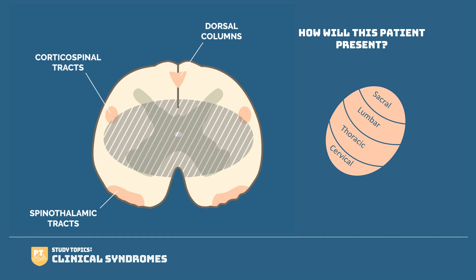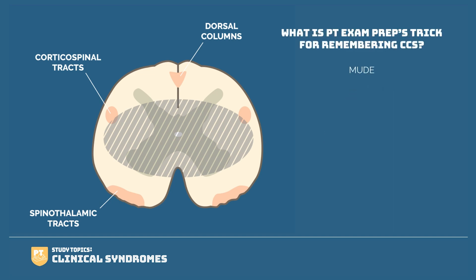Why is the upper extremity more affected than the lower extremity? If you look at the corticospinal tract, the most medial aspect that gets affected is the cervical spine, followed by thoracic, lumbar, and sacral. Since only the central portion is affected in central cord syndrome, the upper extremity is more affected than the lower. A great mnemonic is MUDE: Motor is more affected than sensory, Upper extremity more than lower, Distal more than proximal, and it's caused by an Extension injury.